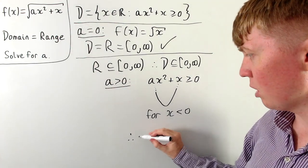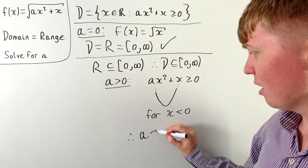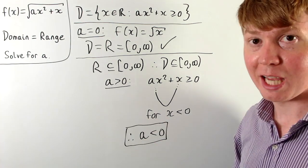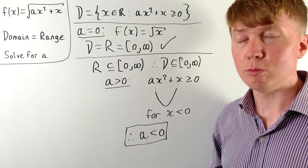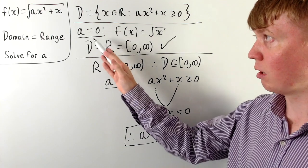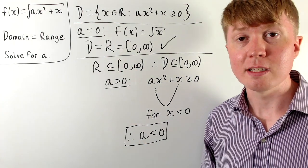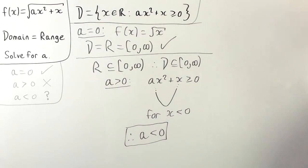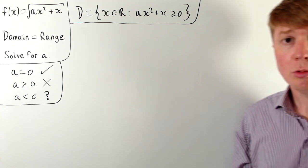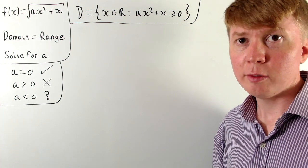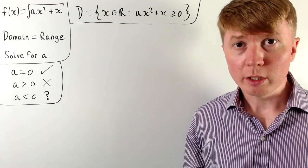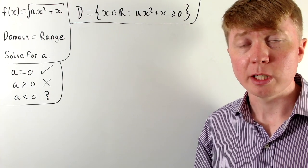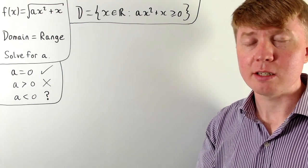We can conclude that a has got to be less than zero for all remaining cases, since we've already considered separately the case where a equals zero.